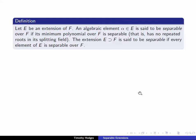Let's start by recalling the definition of separability. Let E be an extension of a field F. An algebraic element alpha in E is separable over F if its minimum polynomial has no repeated roots in a splitting field. And an extension is said to be separable if every element of E is separable over F.